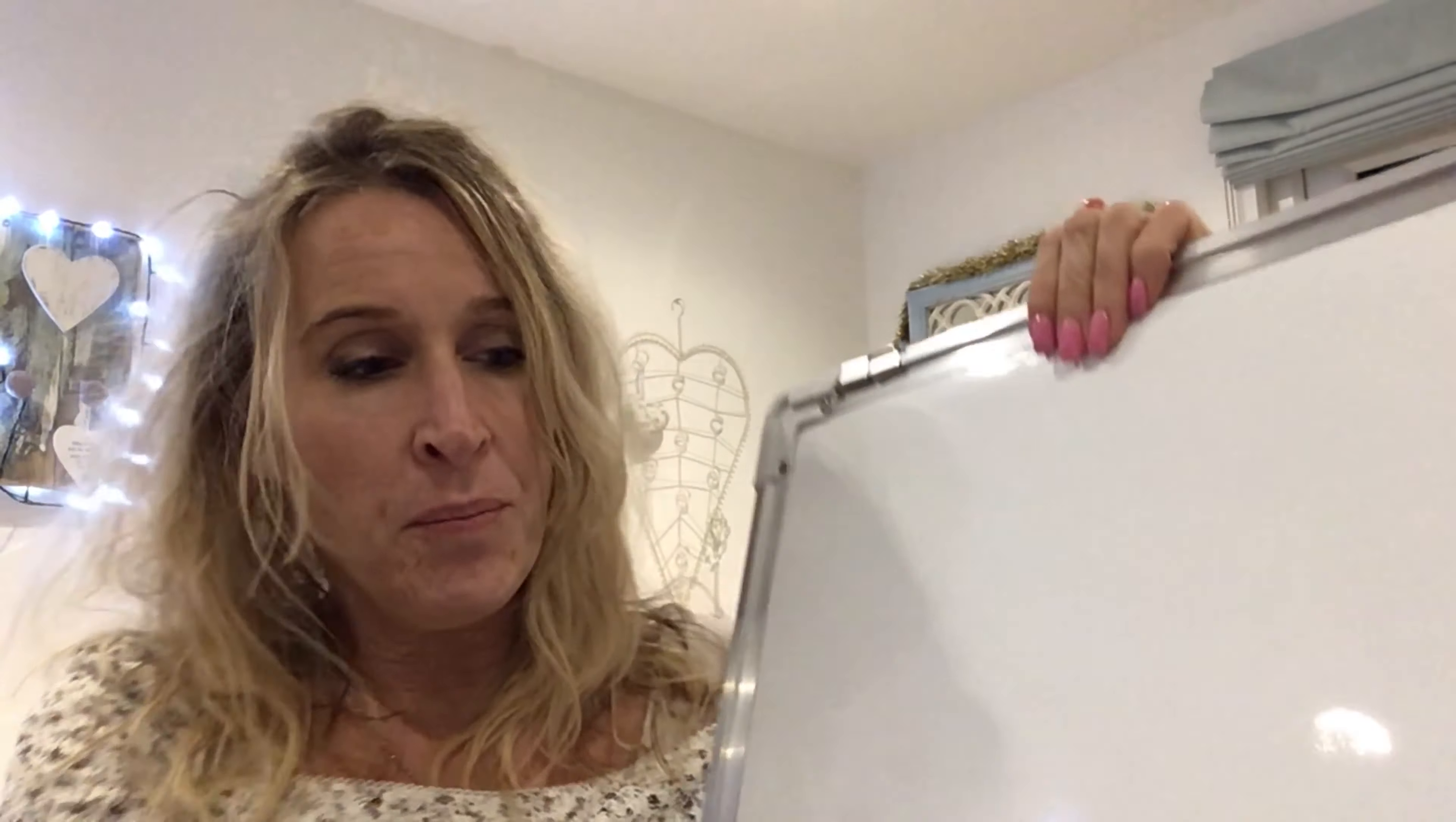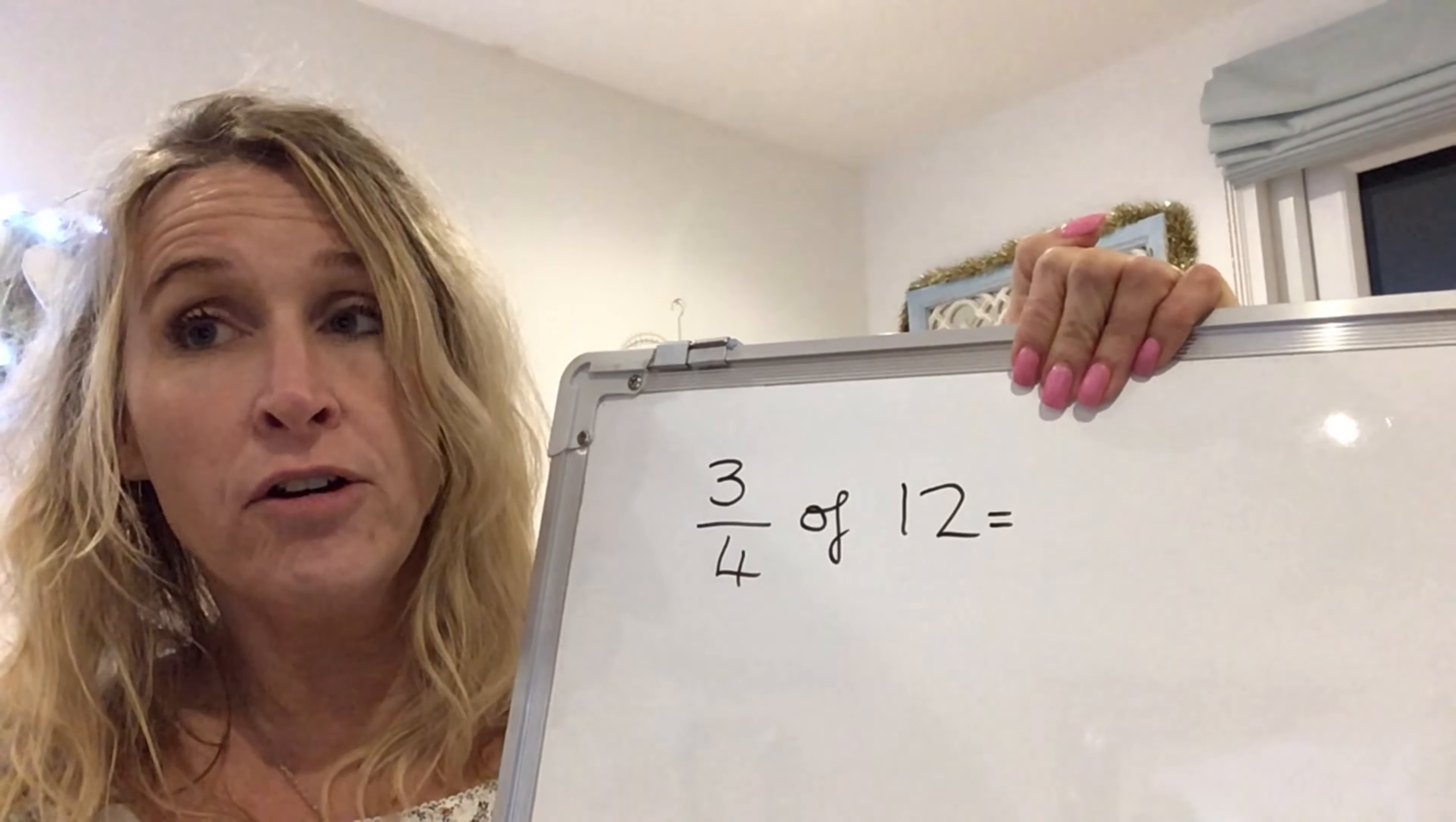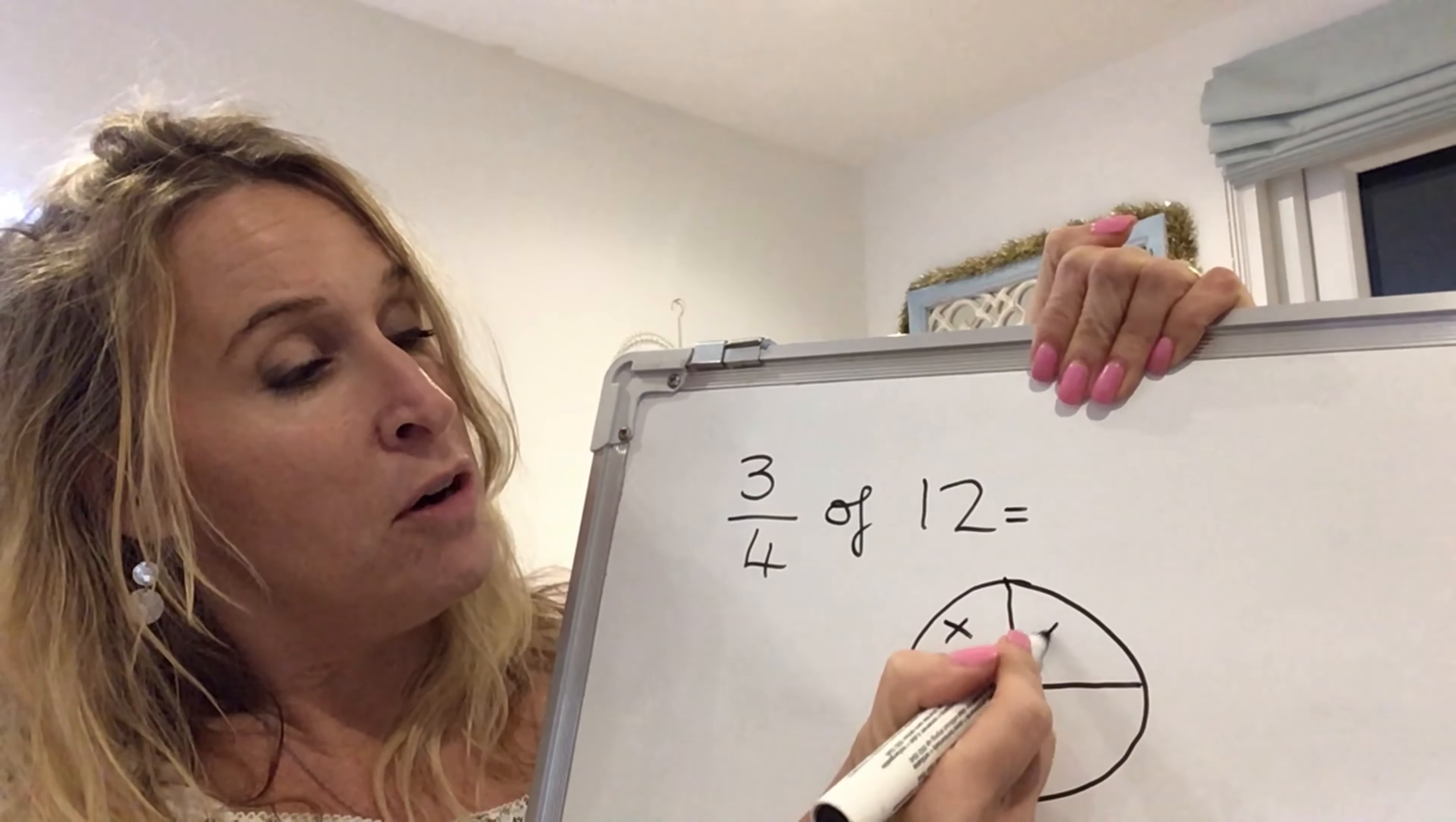So lots and lots of practical work would work really well with the children. Now, when they've got the hang of the practical, next step would be to be able to start to give the children something like three quarters of 12 and they can work it out. Now, at this stage in key stage one, in year one and two, we're working on using our crosses to actually help us. So we've moved on from cubes and we're now going to work on a visual working out method. So first of all, we are going to divide it into four pieces. We are going to share out 12 crosses.